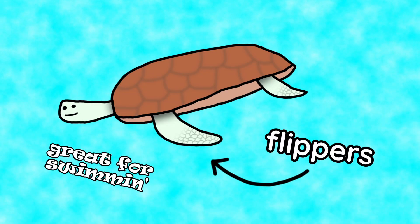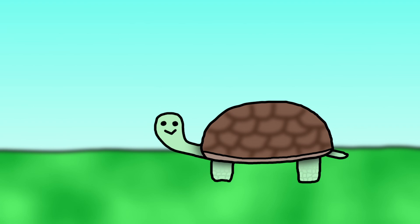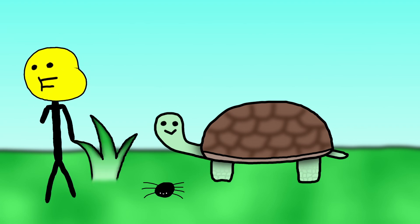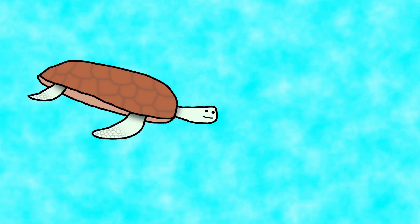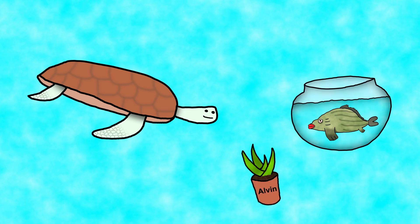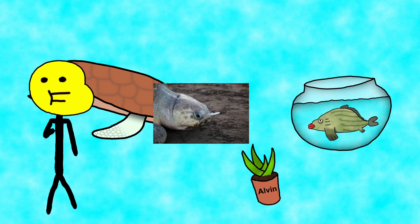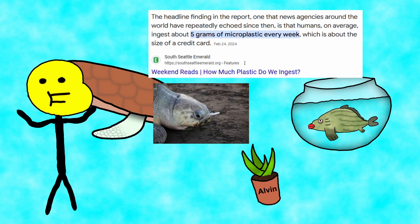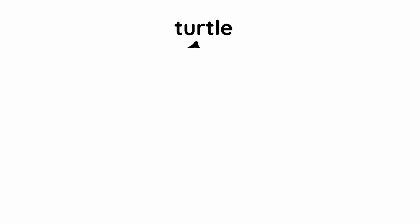Back to land: tortoises eat mostly plants and the occasional bug — so just like humans. And water turtles eat everything: plants, fish, plastic — so again, just like humans.